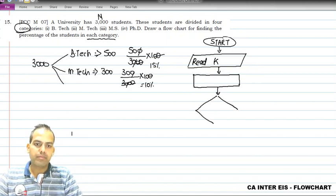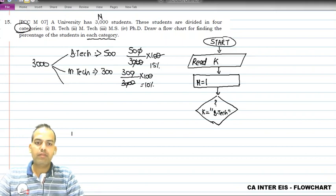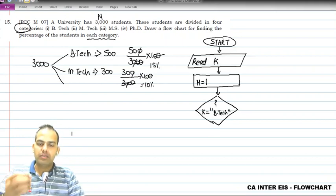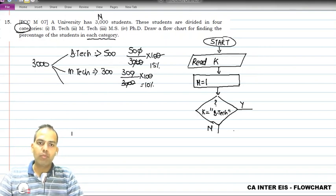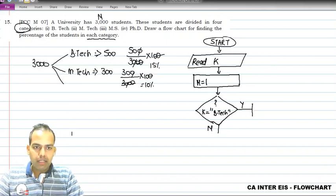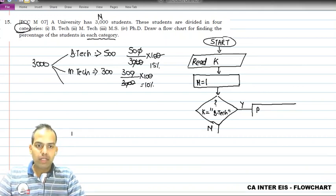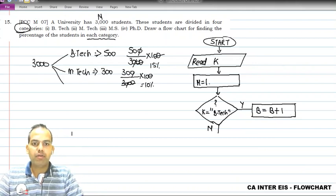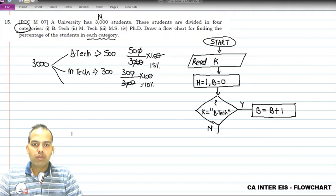Now I am making a decision box to check whether the first student - where n equals 1 - belongs to the B.Tech category. Inverted commas represent textual data, so k equals 'BTECH'. If the answer is yes, I want the count to be summed up, so B equals B plus 1. Initially B is defined as 0.